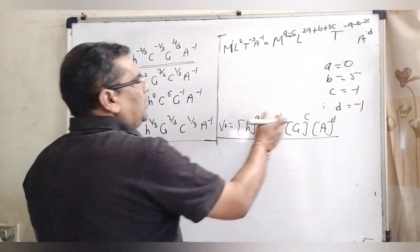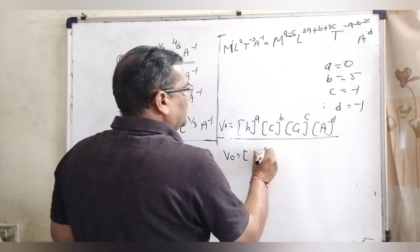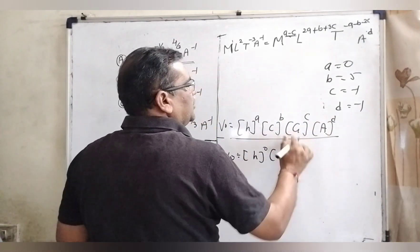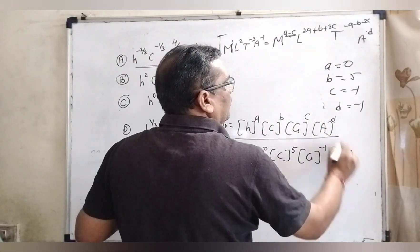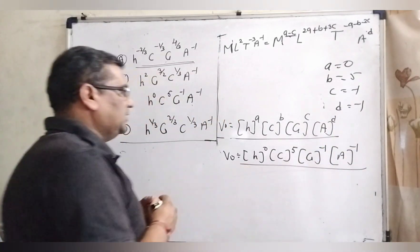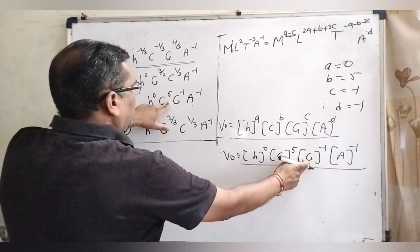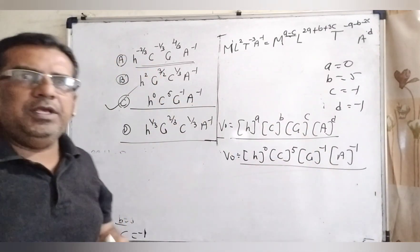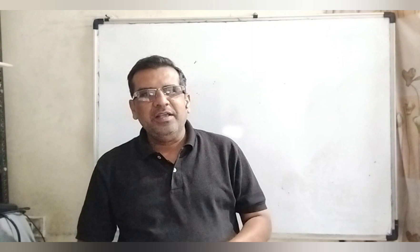Now substituting these values: V₀ = h⁰ · c⁵ · G⁻¹ · A⁻¹. Looking at our options, this matches Option C: h raised to power 0, c raised to power 5, G raised to power −1, and A raised to power −1. So the correct option is C. I hope you understood this question. Thank you for staying till the end of this video — don't forget to subscribe to my channel. Thank you, take care, bye-bye.